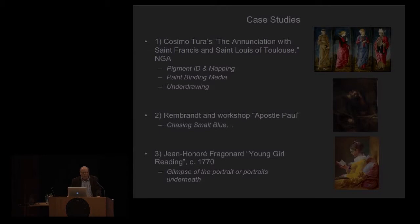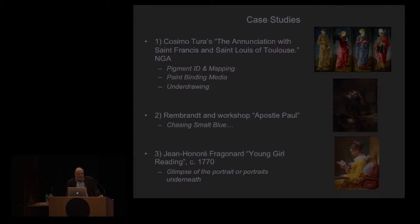I'll show a few case studies. The first is Cosimo Tura's Annunciation with St. Francis and St. Louis of Toulouse, in the gallery's collection — we'll talk about pigment mapping and identification, paint binder media identification, and underdrawing materials. Then we'll talk about a Rembrandt and workshop painting, Apostle Paul, where we'll be chasing smalt blue. Lastly, we'll look at Fragonard's painting of a young girl reading and different glimpses of a portrait that lies underneath.